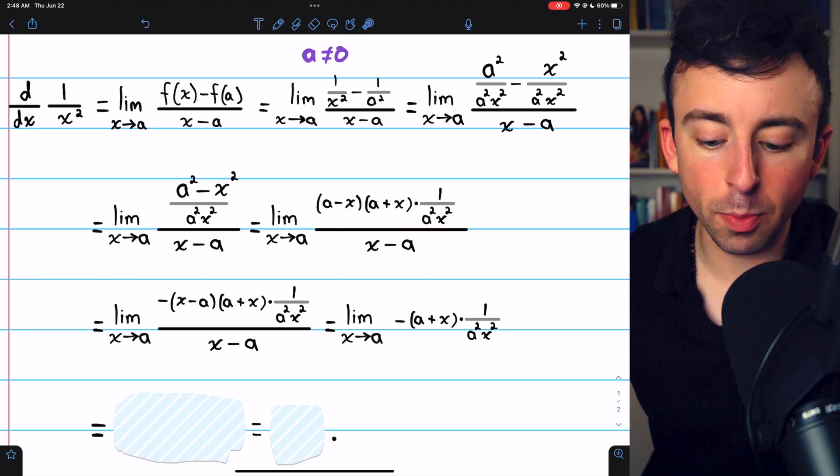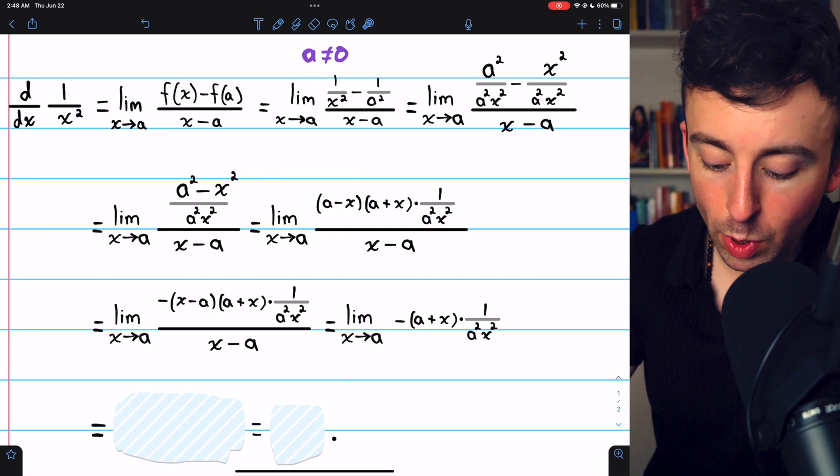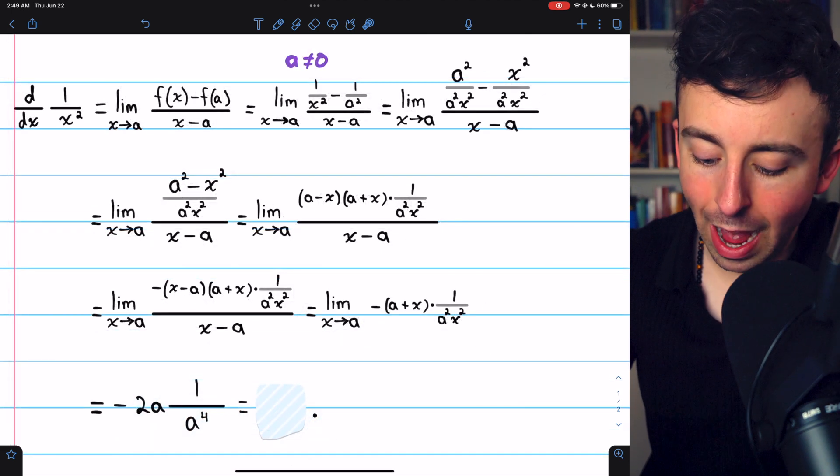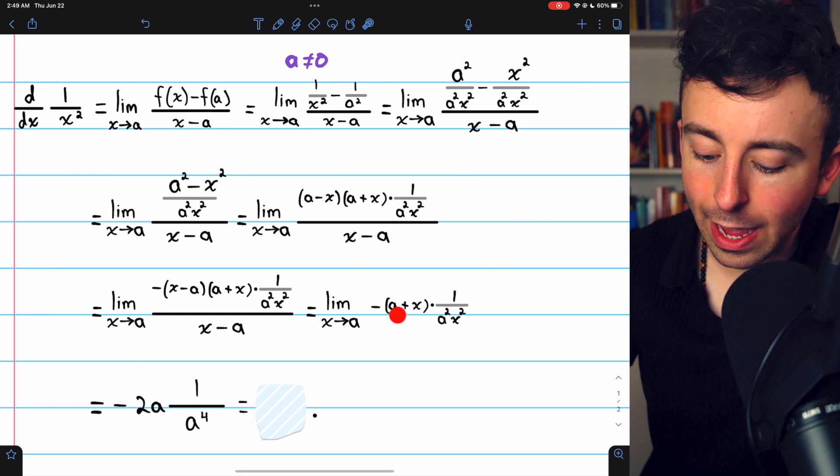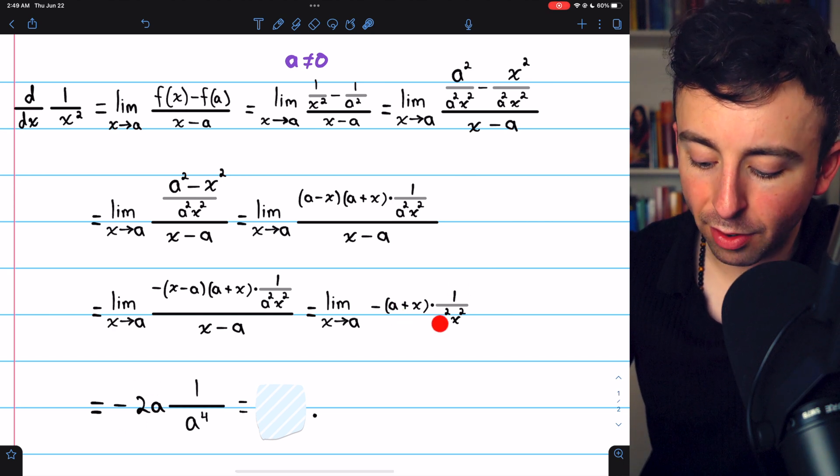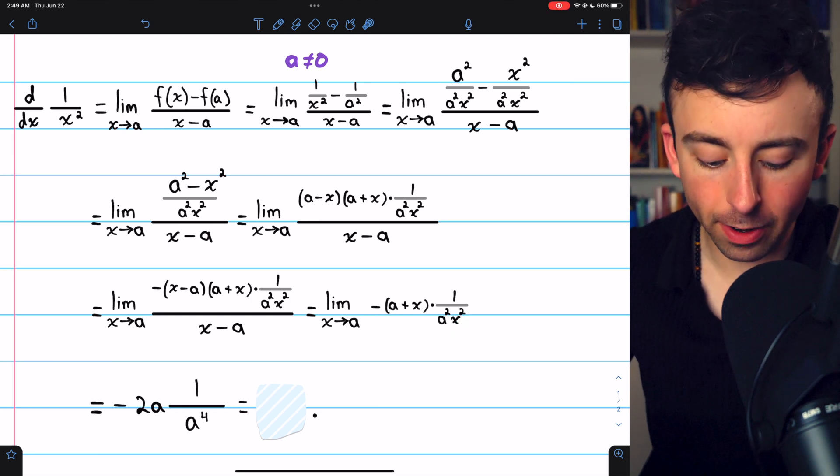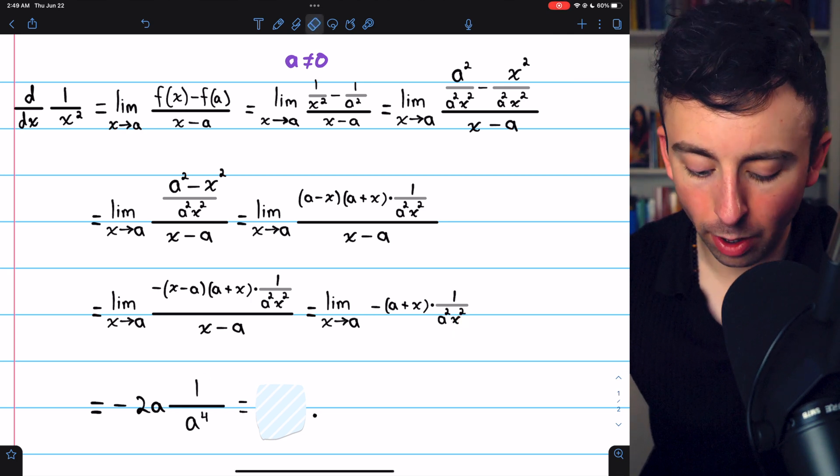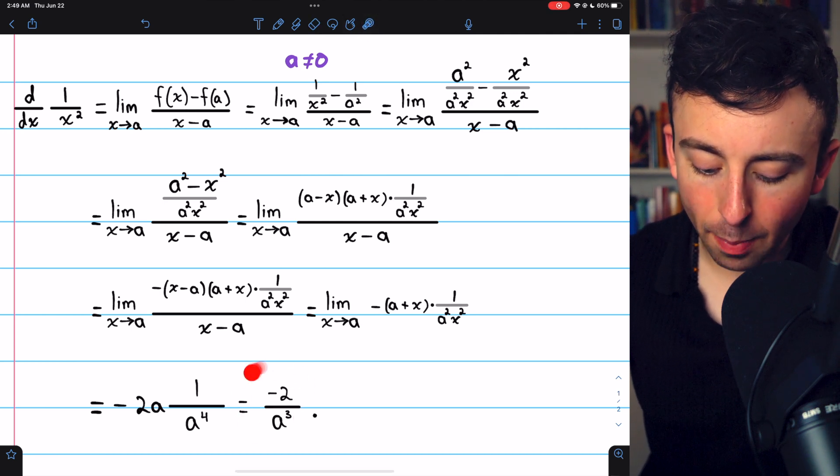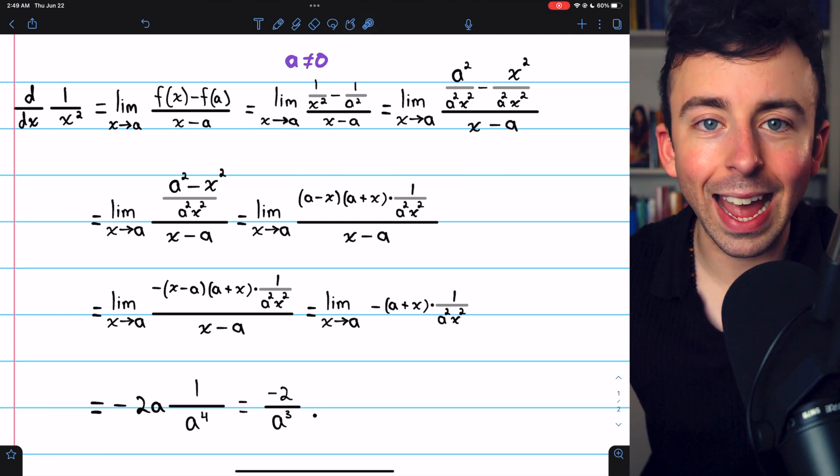And now, remember, we're assuming that a is non-zero. We can just plug a in for x. Plugging a in for x gives us negative a plus a, which is negative 2a. And then we have 1 over a squared times a squared. That's just 1 over a to the fourth. So then a factor of a will cancel out. And we finally end up with negative 2 over a cubed.